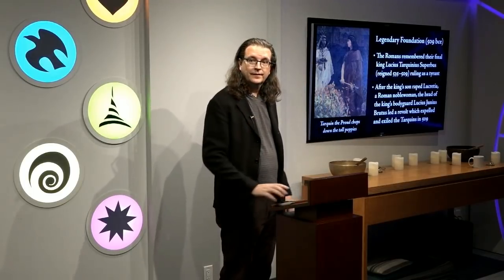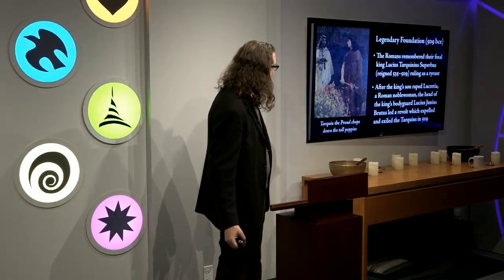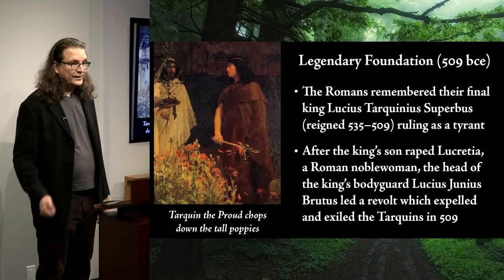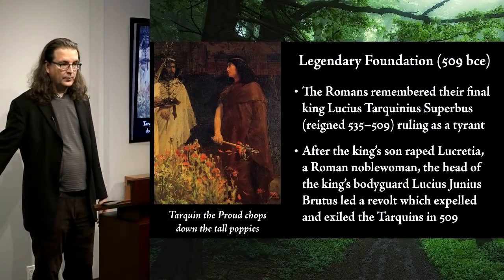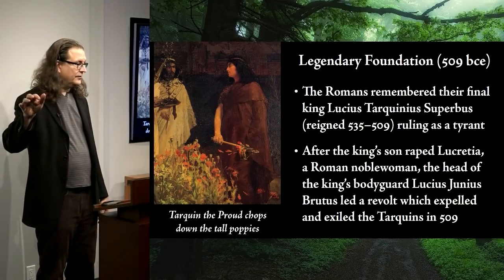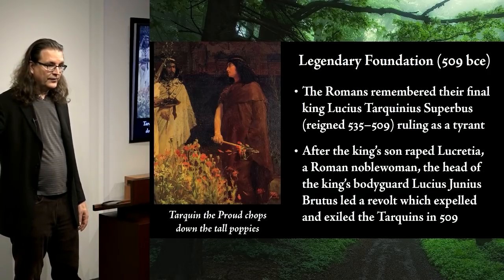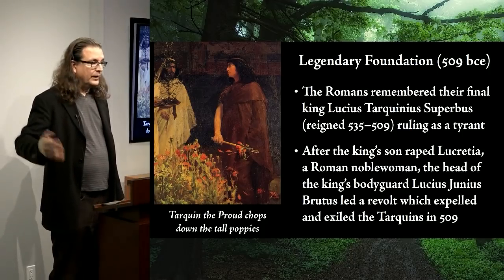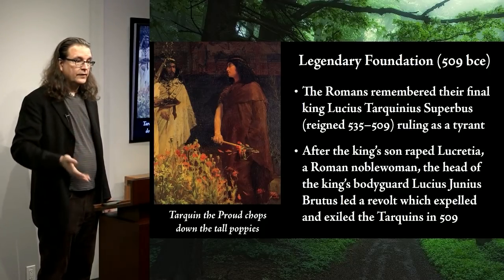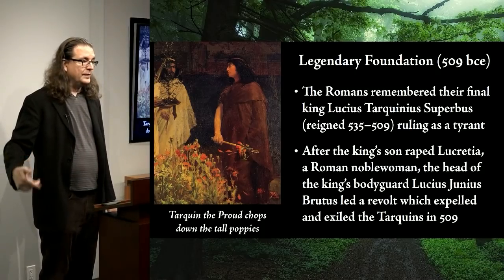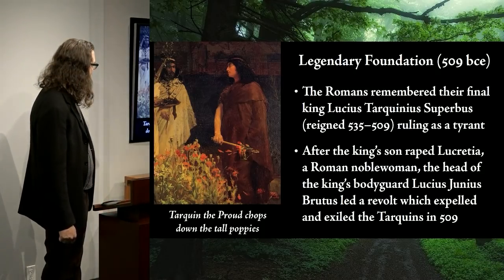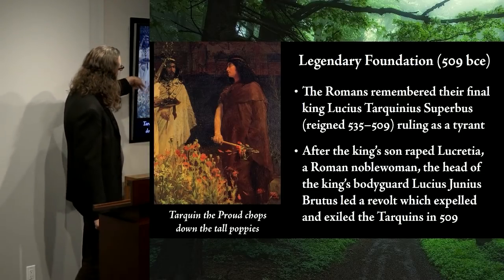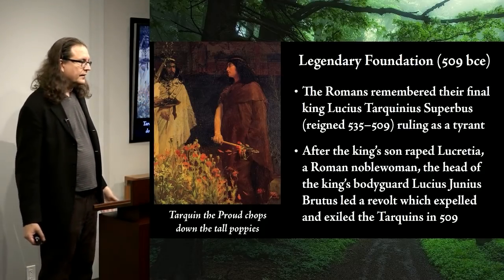One thing Tarquin the Proud is known for in the legendary stories: there's a romantic painting of him in a flower bed cutting off the tall poppies — the ones that stuck their heads up too high got their heads chopped off. He used this to explain to his son that if any of the nobles stick their heads up too high, those are the ones you kill to keep the rest in line.